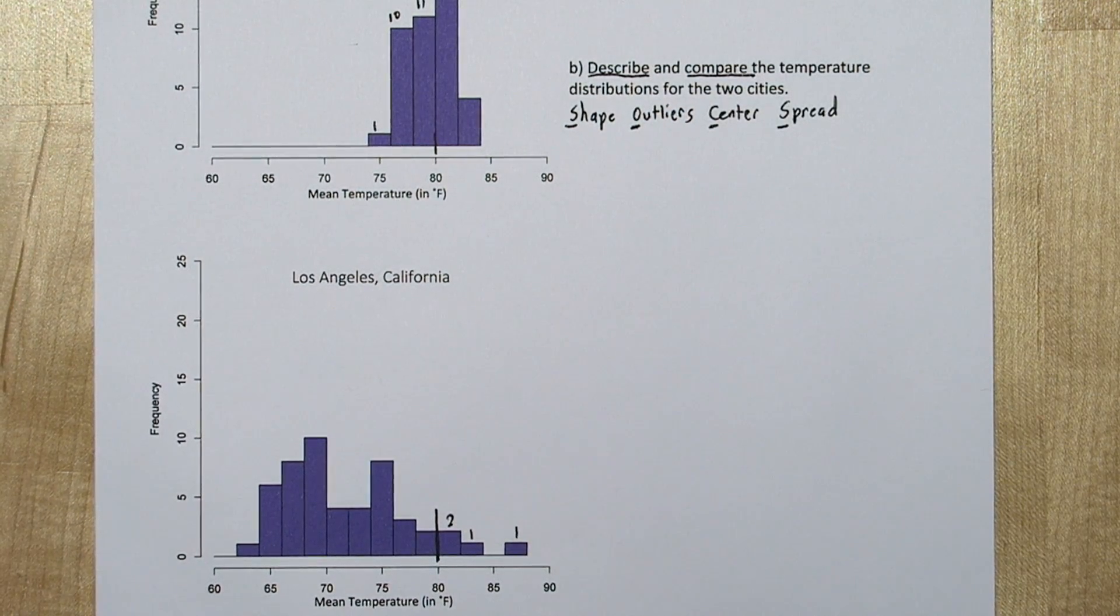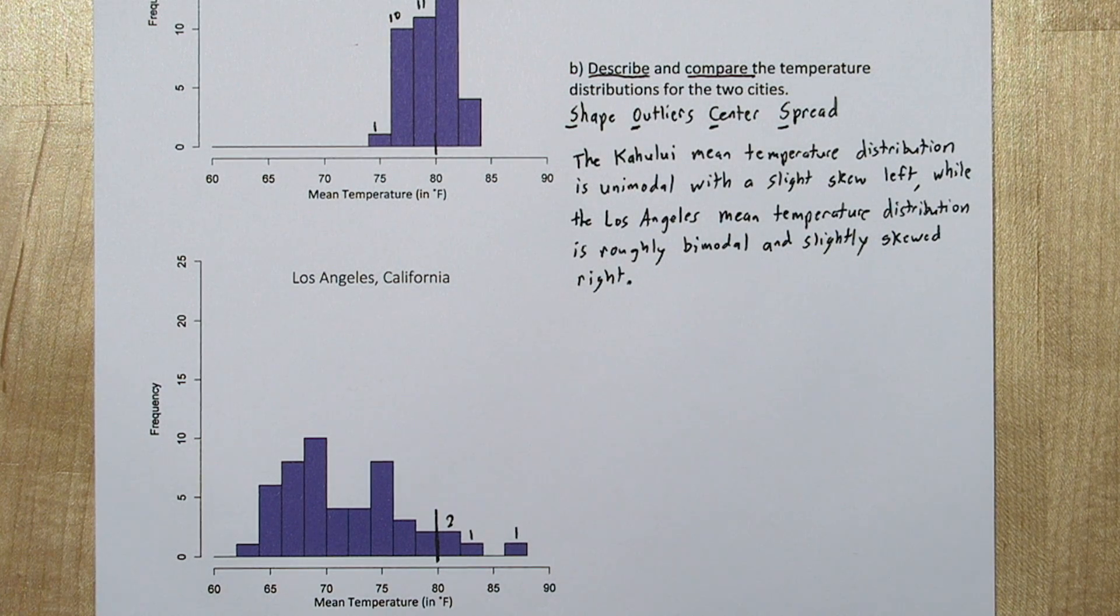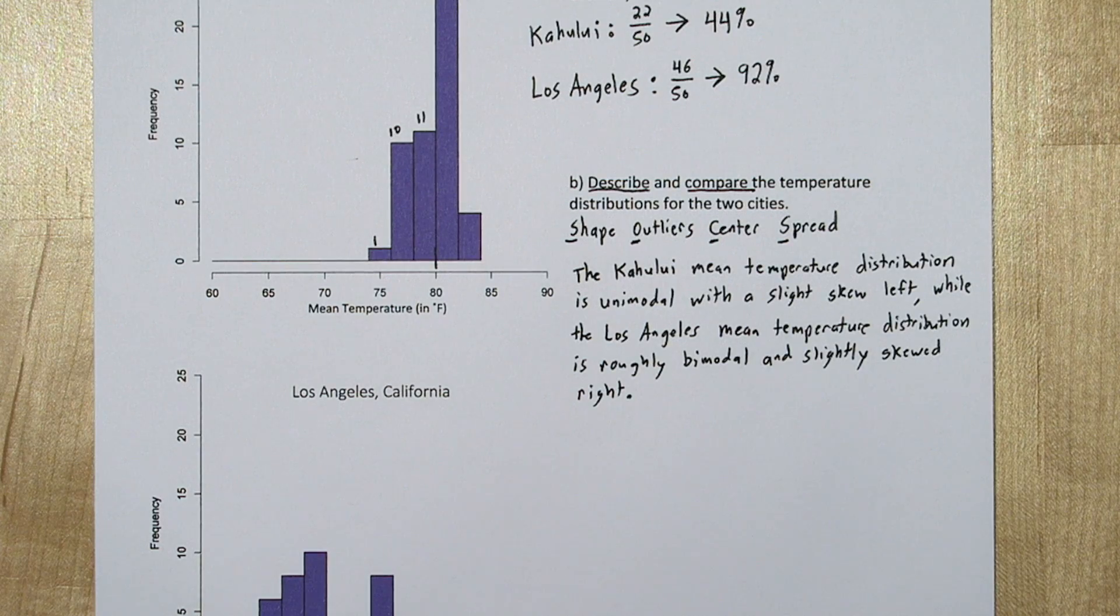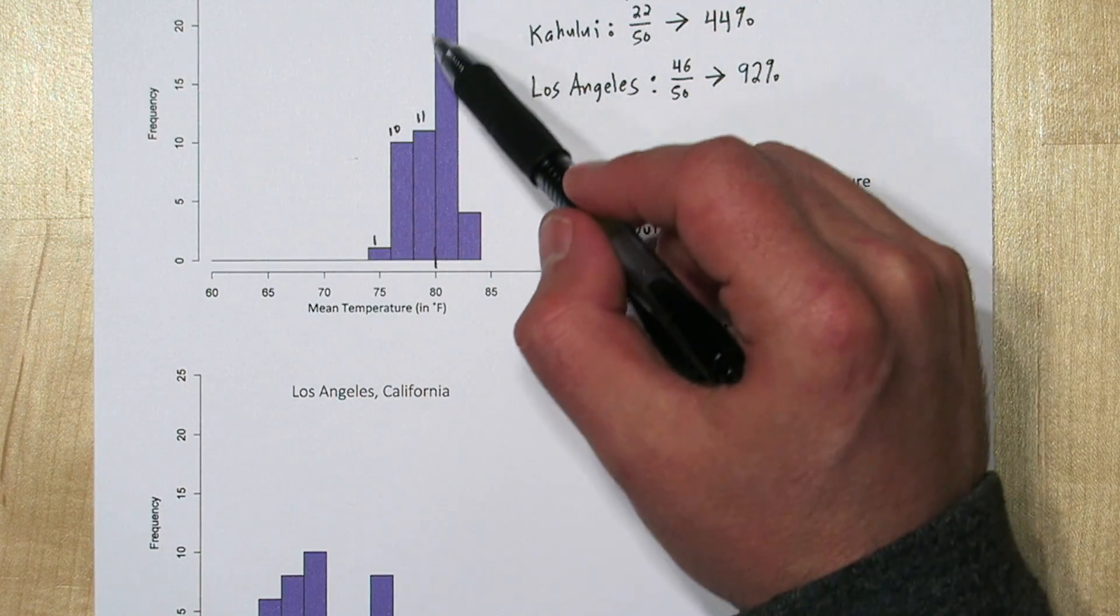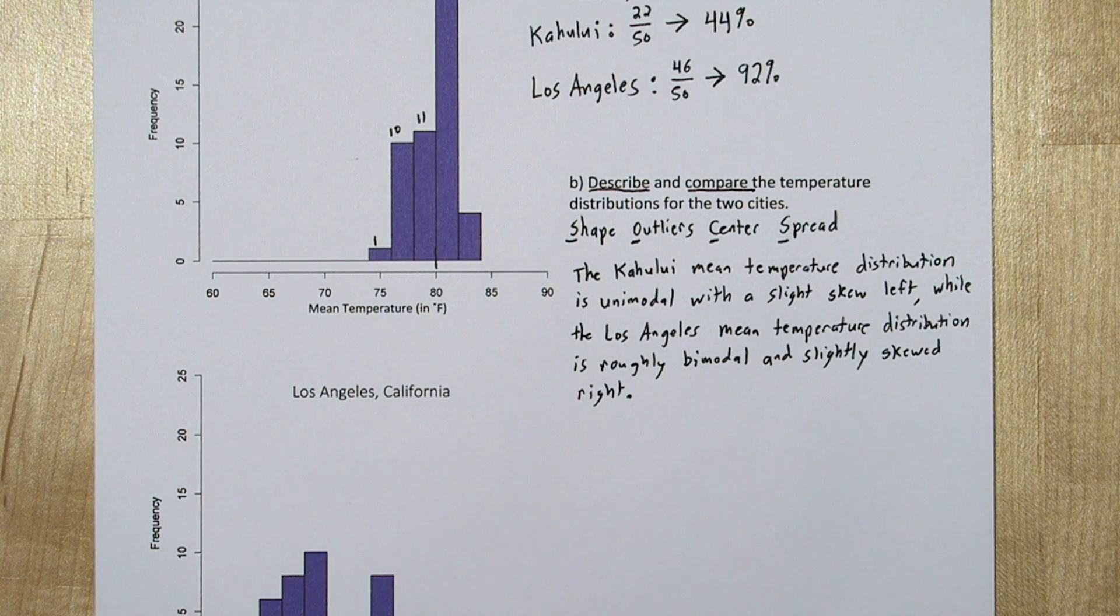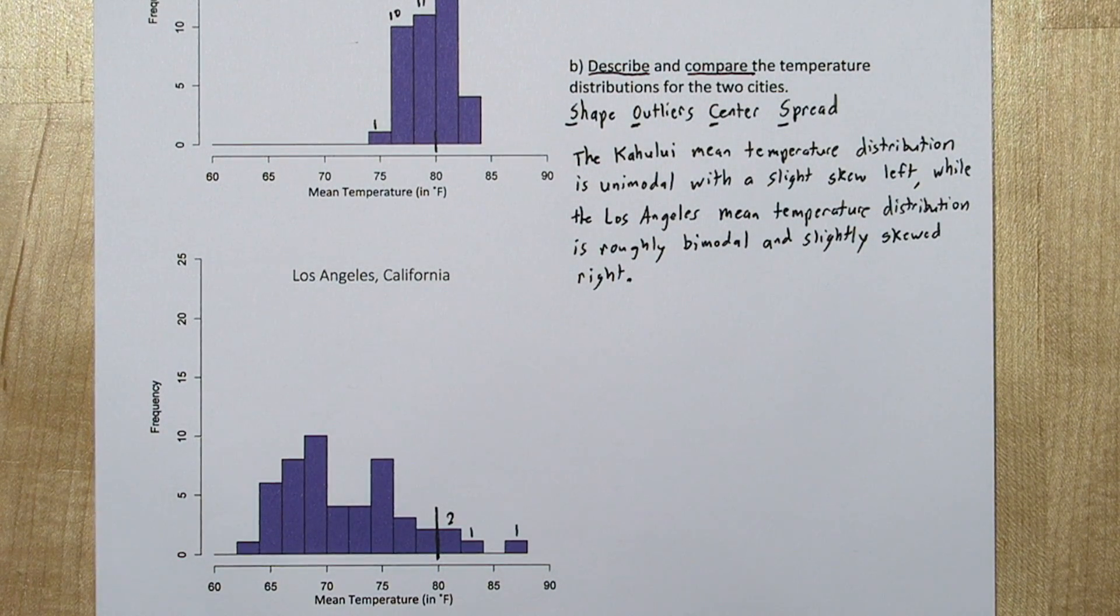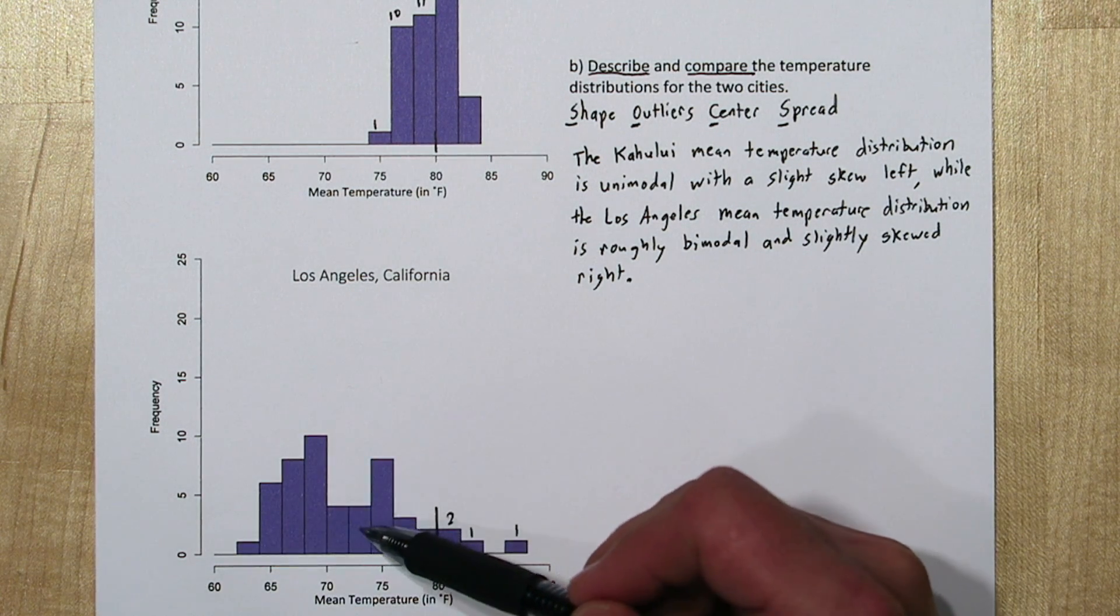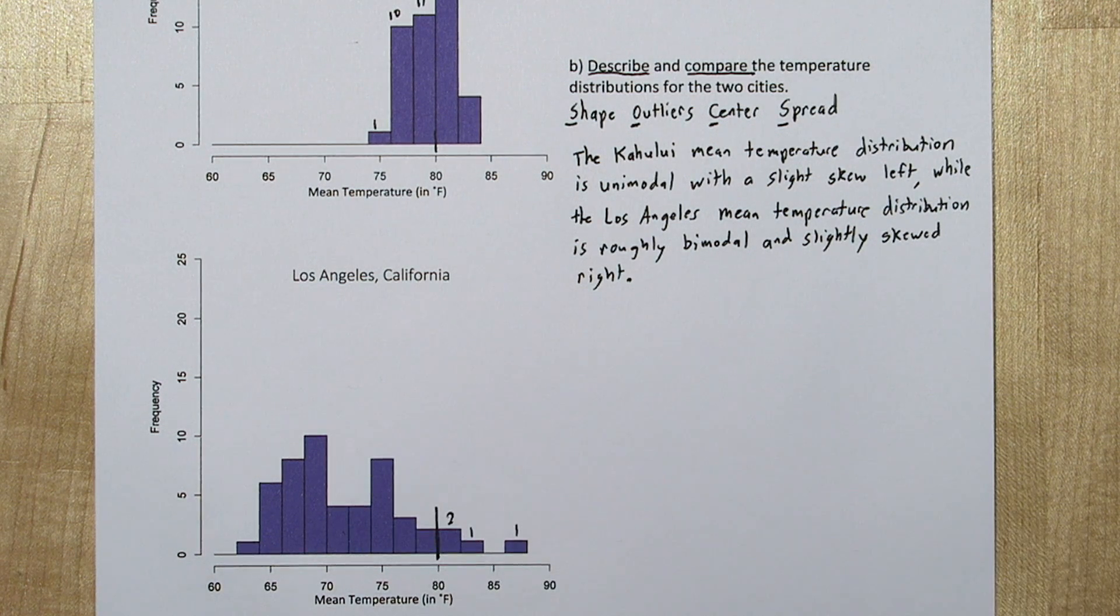Let's start with the shape. We can say the Kahului mean temperature distribution is unimodal with a slight skew left. You can see that it peaks right here and it tapers off to the left, so it's skewed left. While the Los Angeles mean temperature distribution is roughly bimodal and slightly skewed right. Bimodal means there's kind of two humps in the data. Maybe one right there and one right there. But it's also skewing off to the right.